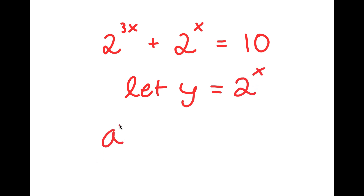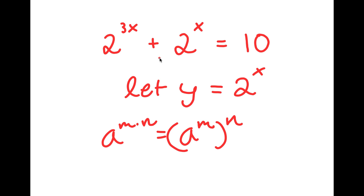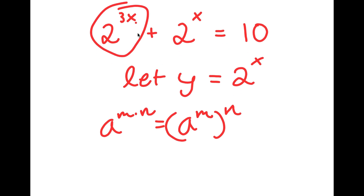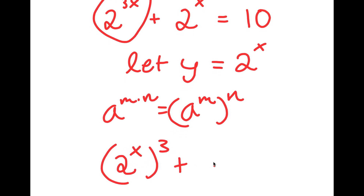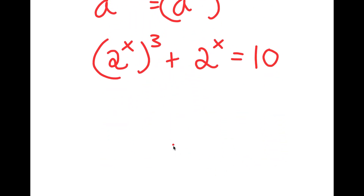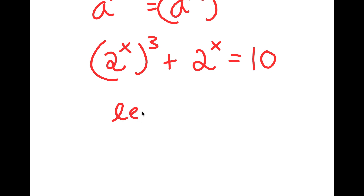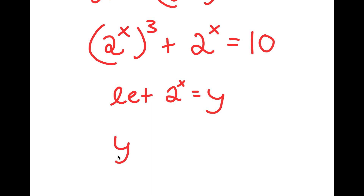If I have something in the form a to the power of m times n, this is equal to a to the power of m to the power of n. So 2 to the power of 3x is going to equal 2 to the power of x to the power of 3. Now I have this plus 2 to the power of x is equal to 10. Letting 2 to the power of x equal to the variable y, I get y to the power of 3 plus y is equal to 10.